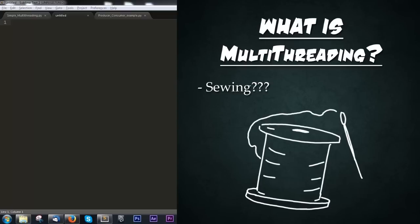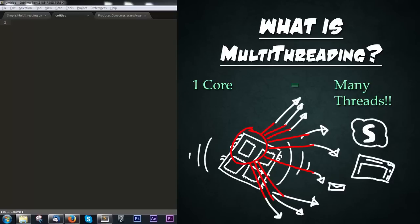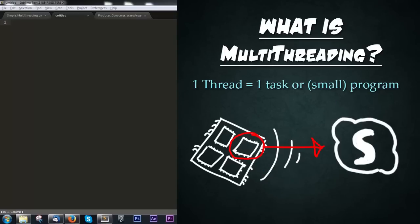So, multithreading — what is it? Well, you know how you can run multiple programs at once like Firefox, Skype, Thunderbird, Photoshop, all of them at once? That is accomplished typically through multithreading. Multithreading is running multiple tasks in parallel to each other on the CPU. Most CPUs nowadays have at least a dual core or quad core, sometimes many more. And each of these cores can run many, many threads simultaneously. Think of a thread as simply a process or task that it's executing.